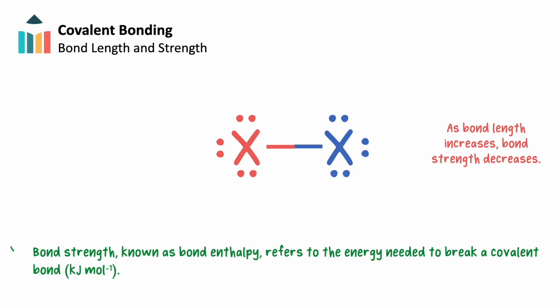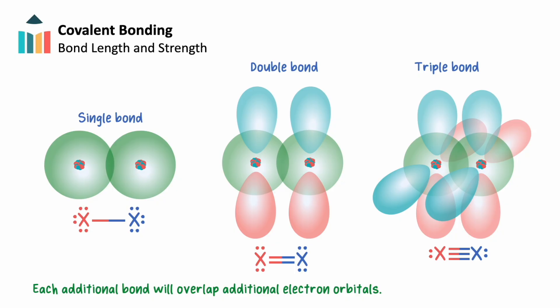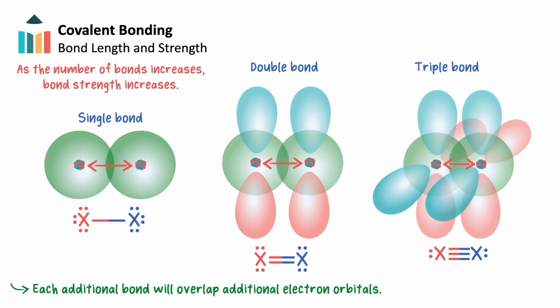Bond strength refers to the energy required to break a bond at standard ambient temperatures and pressures. This is called bond enthalpy, and is measured in kilojoules per mole. Stronger bonds have a larger measured bond enthalpy. The number of covalent bonds shared between two atoms will also play a part in the bond's strength. When atoms form double or triple bonds, they do so by overlapping additional electron orbitals. Each overlapping orbital will draw the two atoms closer together and increase the attractive force felt by the shared electrons. In general, as the number of covalent bonds increases, the bond strength will increase as well. A single bond takes the least amount of energy to break, a double bond a little bit more, and a triple bond the greatest amount of energy.